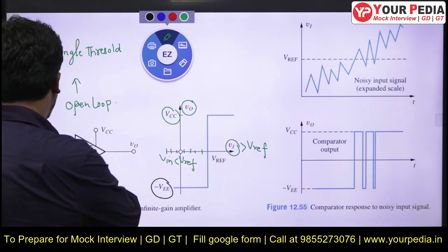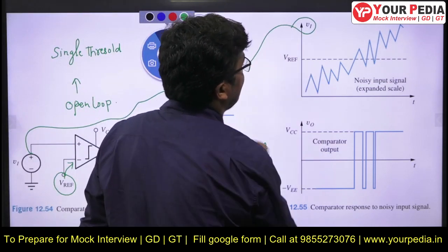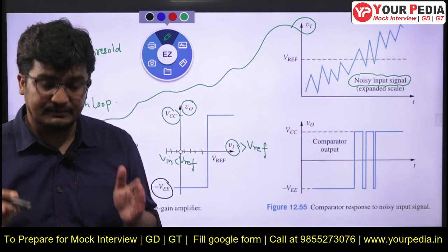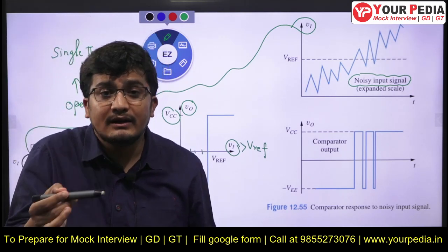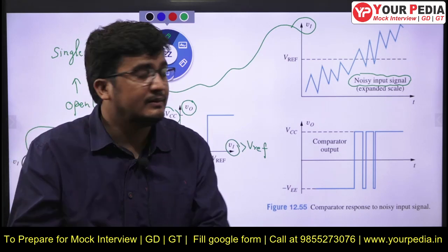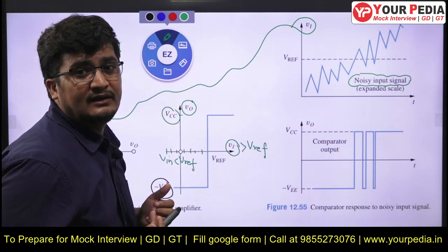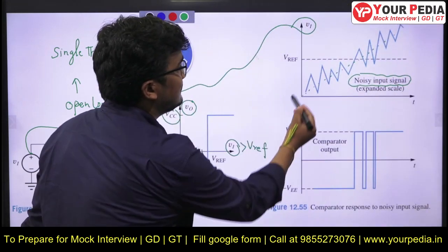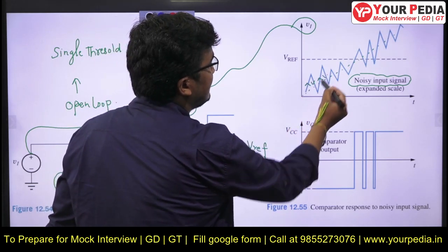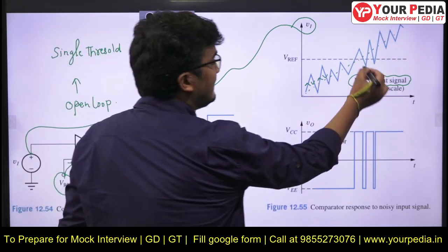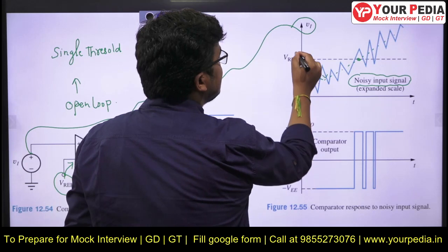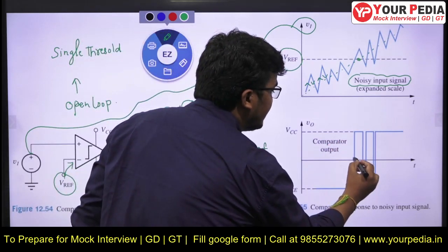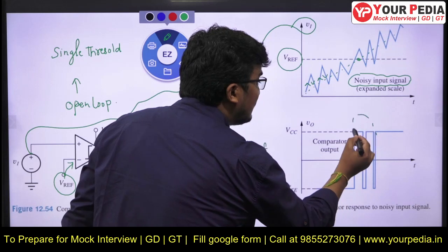Now let us assume this input is not the ideal one — this input now has some noisy effect, some noise or disturbance or interference. Whenever there is noise and interference on some input, there are increments and decrements in the input multiple times in a very short span of time. I have shown this on an expanded scale to help you understand. I am assuming this is my ideal input, and because of noise there are increments and decrements in the input. For the ideal input, there is only one point where the input crosses the threshold, so the transition was expected only at that point.